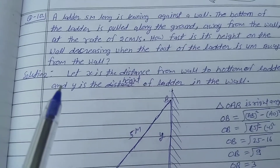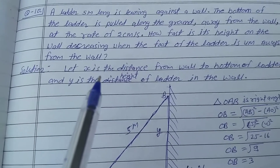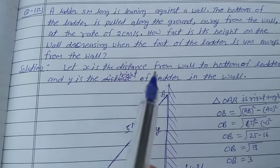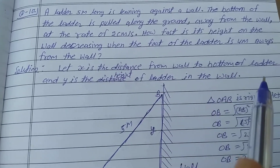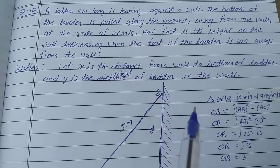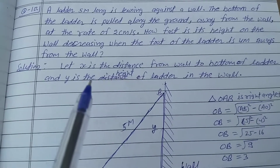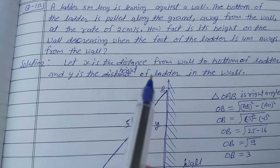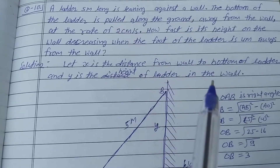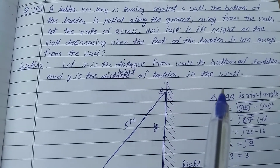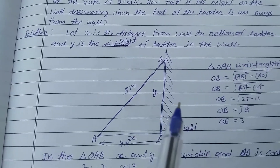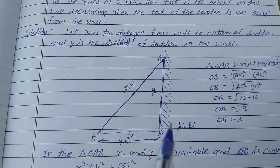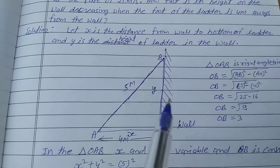Solution start. Let x be the distance from the wall to the bottom of the ladder, and y be the height of the ladder on the wall. Now, construct the diagram.